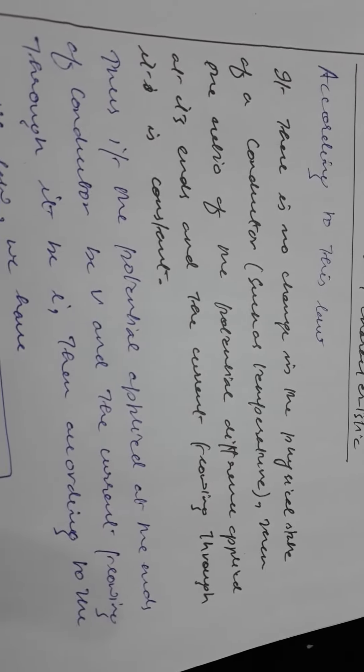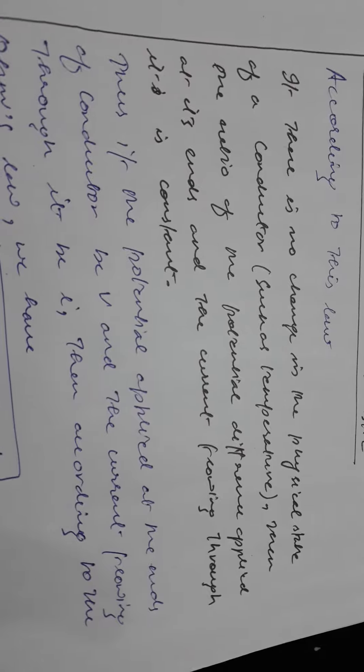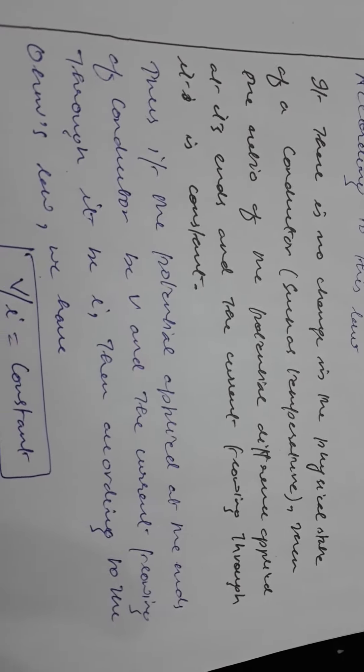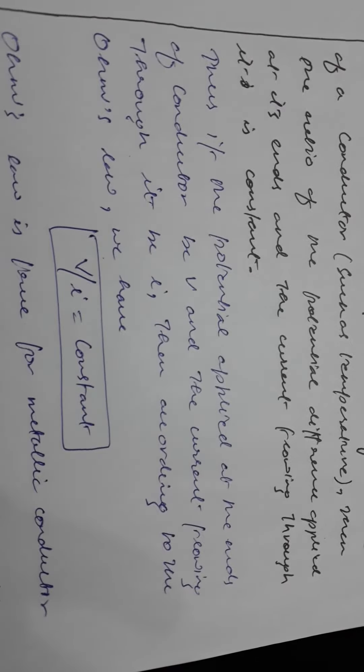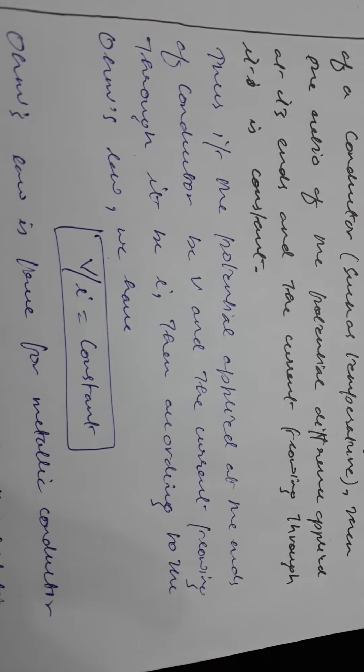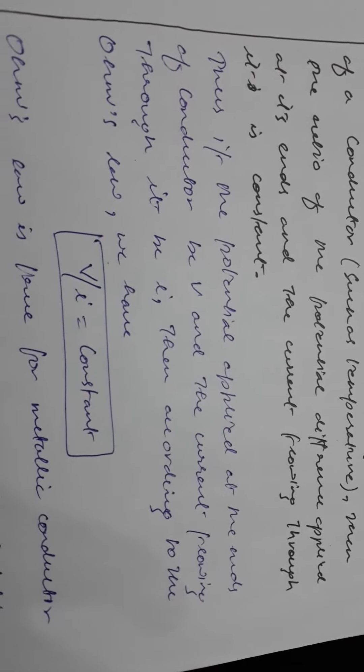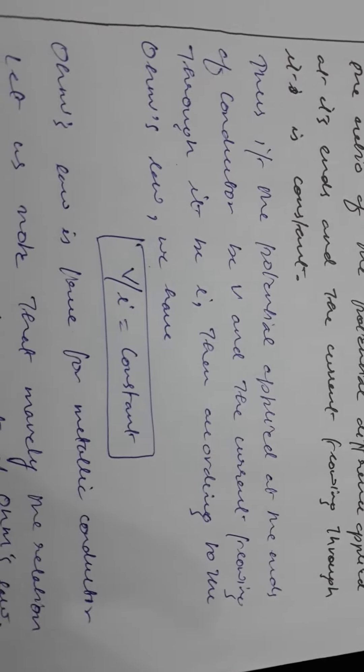Thus if the potential difference at the ends of the conductor is V and the current flowing through it is I, then according to Ohm's law we have V by I equals constant.